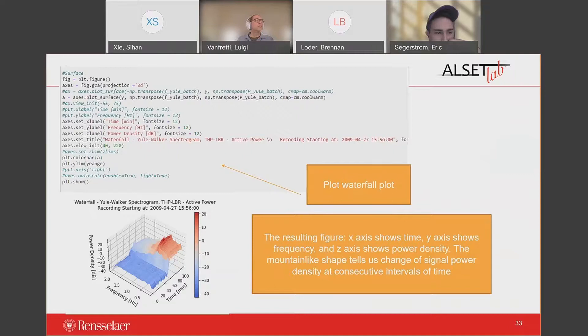As you can see from the graph, the X axis shows time, Y axis shows frequency, and Z axis shows power density. This creates a mountain-like figure, which this shape demonstrates that the power density of corresponding frequency at each time, telling us the change of signal power density at consecutive intervals of time. The visual information displayed by this 3D plot can be significant to research.